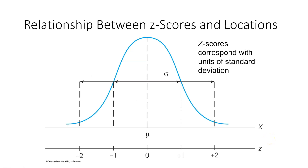This chart shows the relationship between z-scores and their locations. A z-score corresponds with units of standard deviation. So if a score has a z-score of positive 1, that means it falls at one standard deviation above the mean. If a z-score is negative 1, it falls at one standard deviation below the mean. Positive 2 falls at two standard deviations above the mean, and negative 2 falls at two standard deviations below the mean.